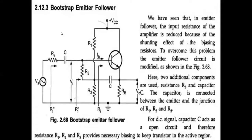The next topic is the bootstrap emitter follower, another technique to get high input impedance. This is the second method. In the Darlington amplifier we got high input impedance by neglecting biasing resistances R1 and R2. In the bootstrap method, we also use an emitter follower since CC configuration has high input impedance, but the input impedance is reduced because of the biasing resistances R1 and R2 which are needed for circuit stability.